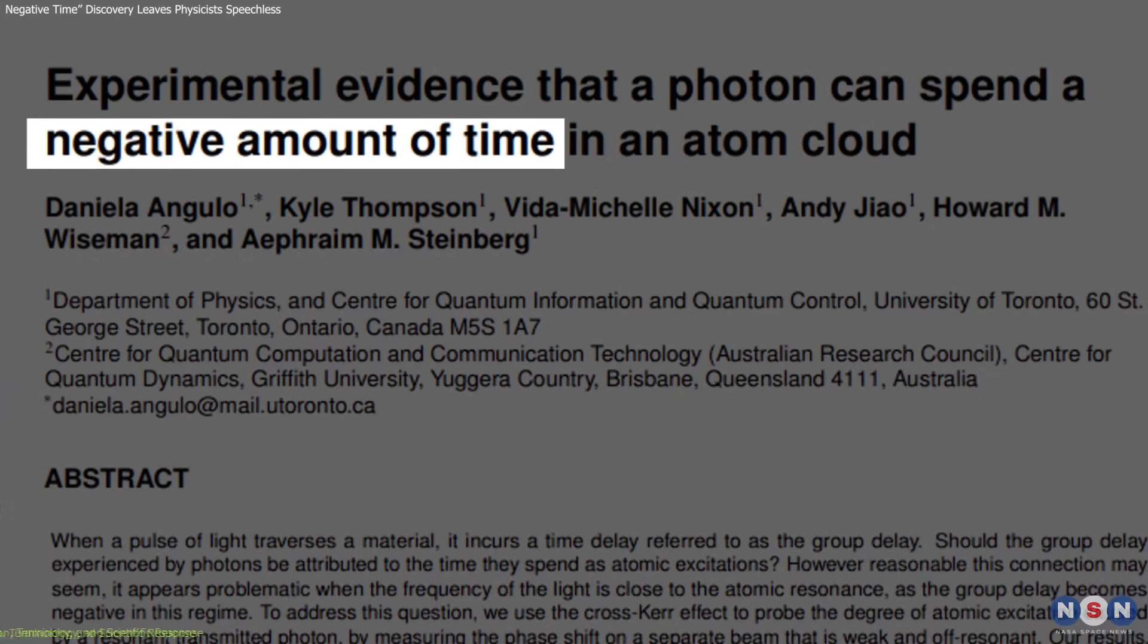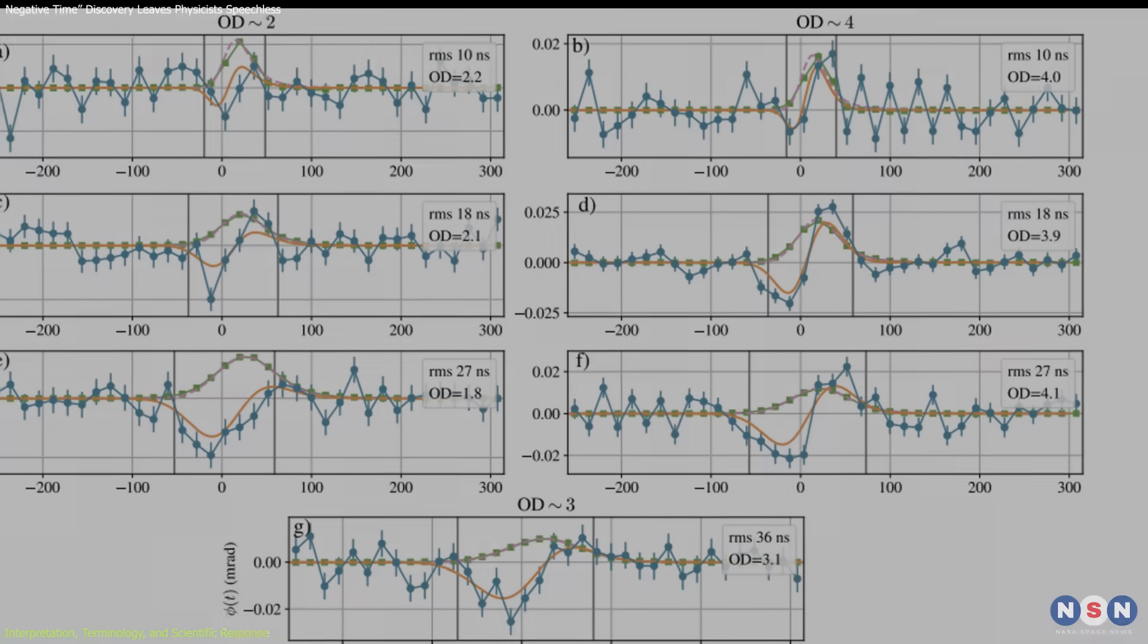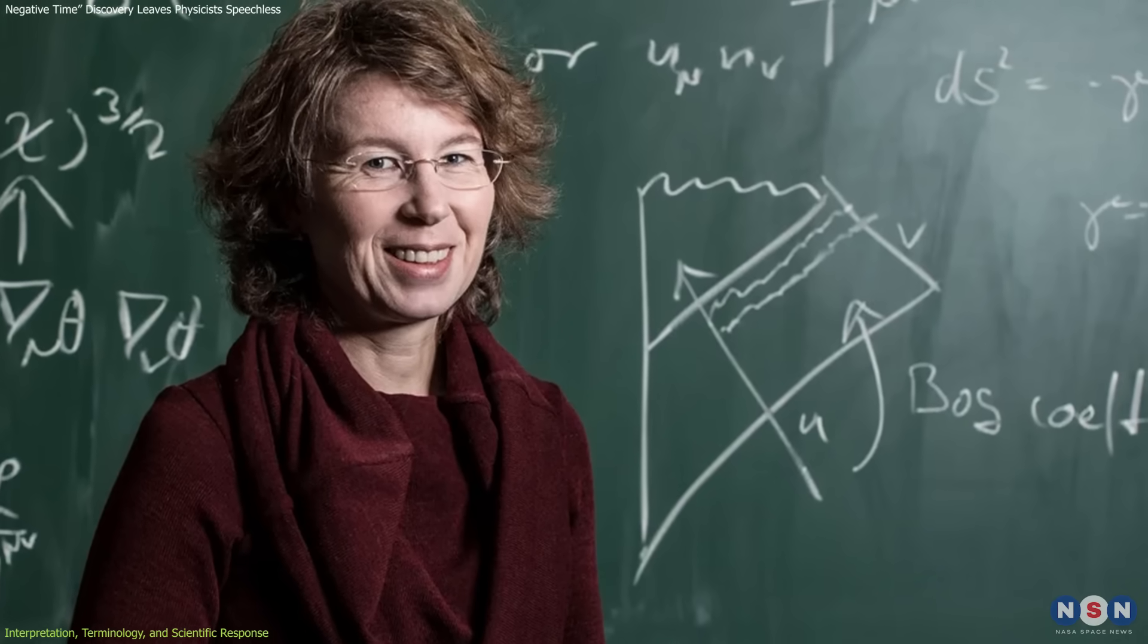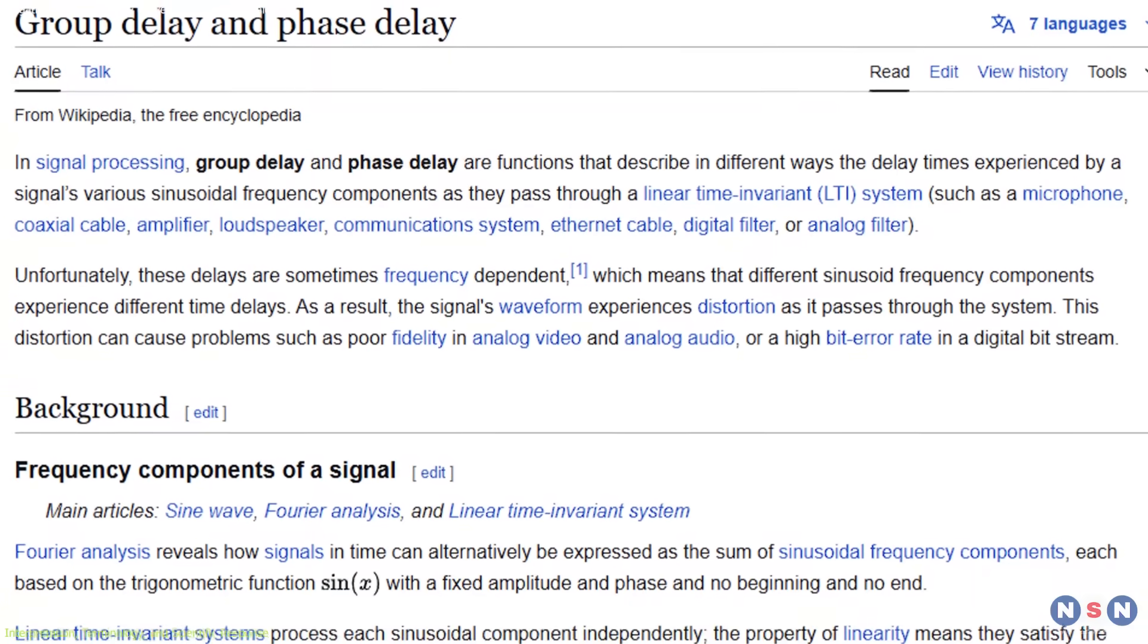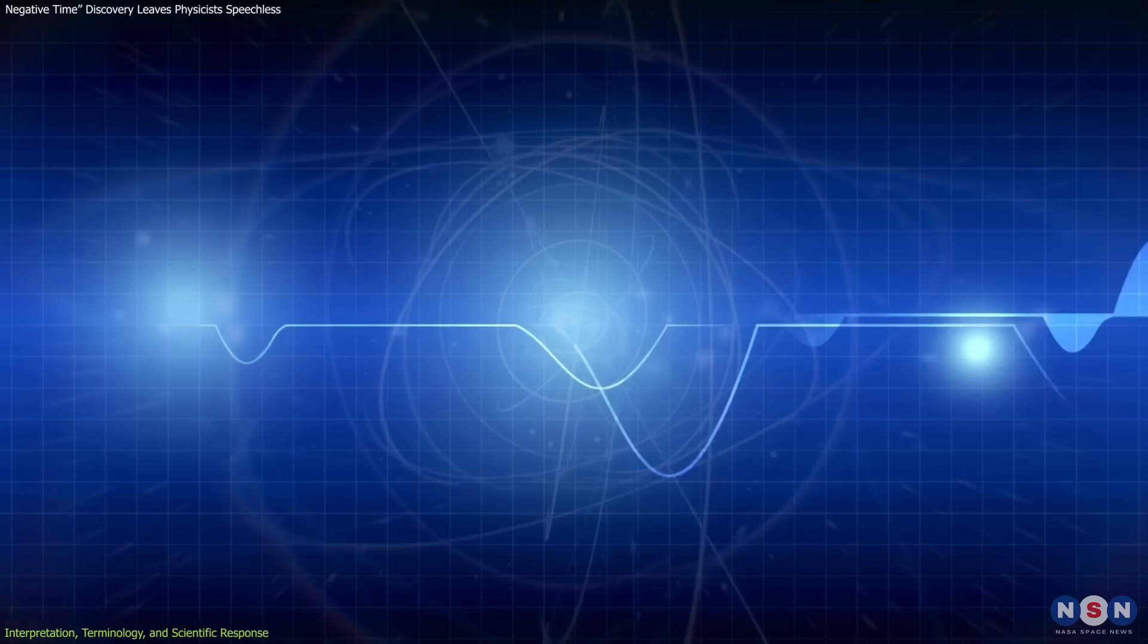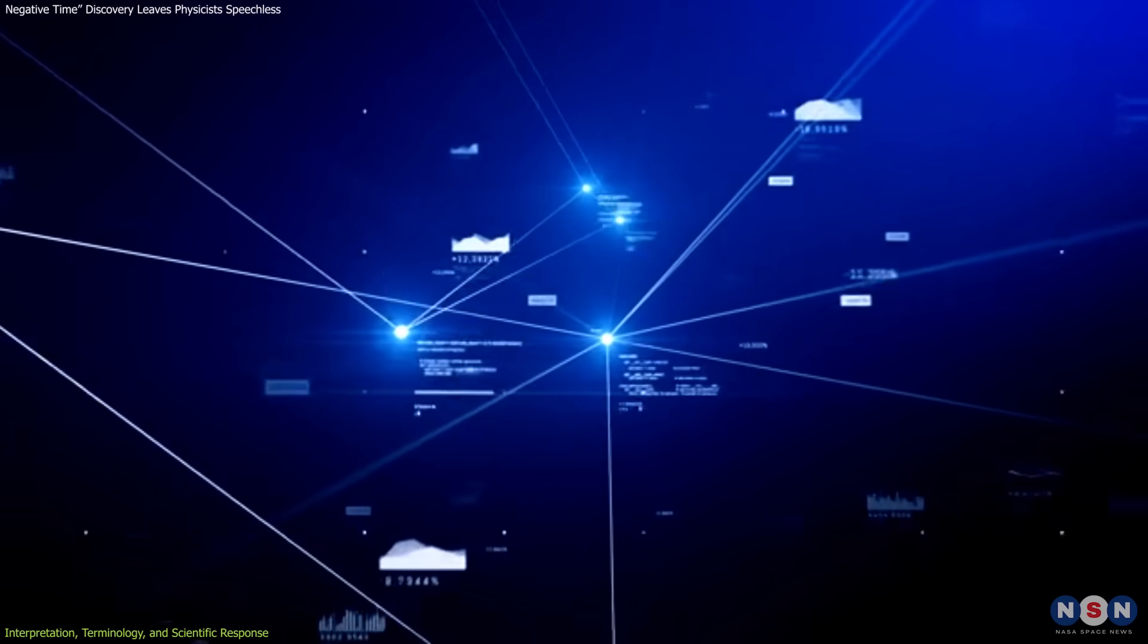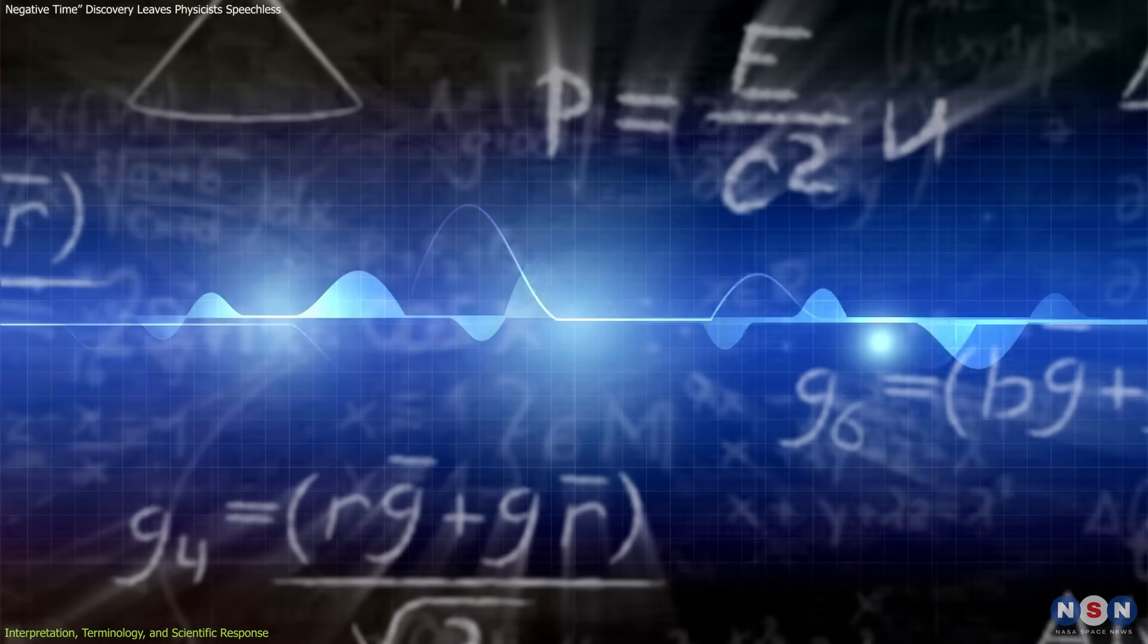The term negative time has proven divisive. While it draws attention to a non-classical result, critics argue it can be easily misunderstood. Among them is physicist Sabina Hassenfelder, who described the effect as a misleading interpretation of group delay, a well-understood concept in optics. Group delay refers to the speed at which the peak of a pulse moves through a medium. In some systems, especially when pulses are distorted or reshaped by a material, this delay can appear faster than light or even negative. But such behavior doesn't transmit usable information and doesn't break the rules of relativity.